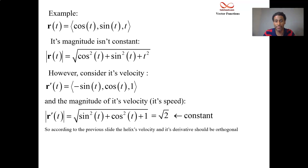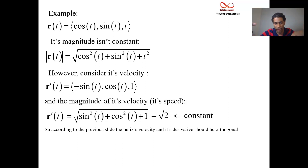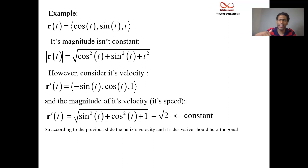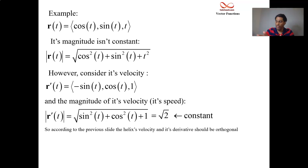And that's a constant. So according to this, when you have a function with a constant magnitude, then its derivative and itself are orthogonal. The velocity vector for the helix is orthogonal to its derivative, which is the acceleration vector. As you're traveling along that helix, your velocity and acceleration vectors will always be orthogonal.